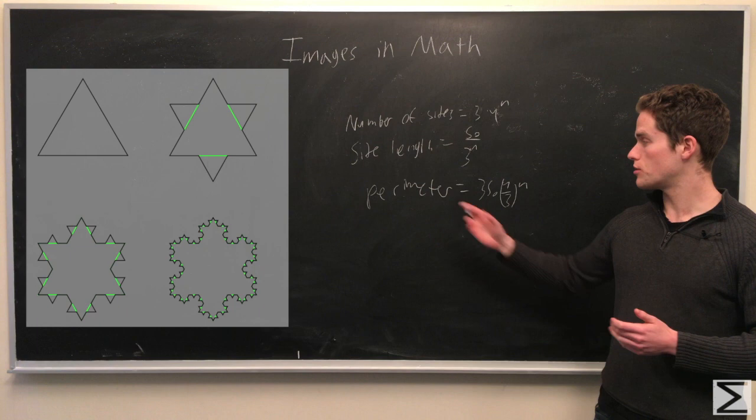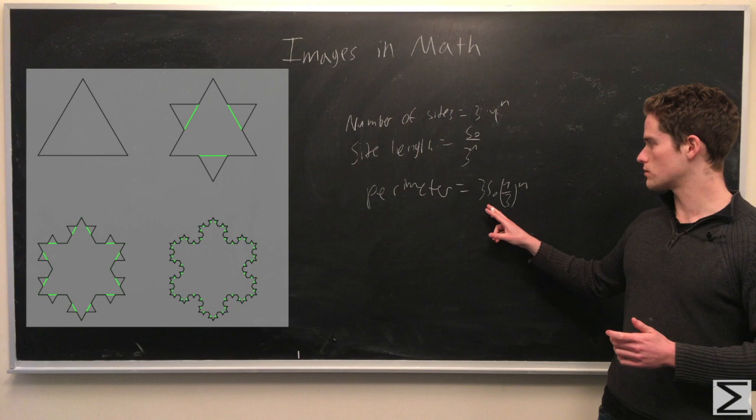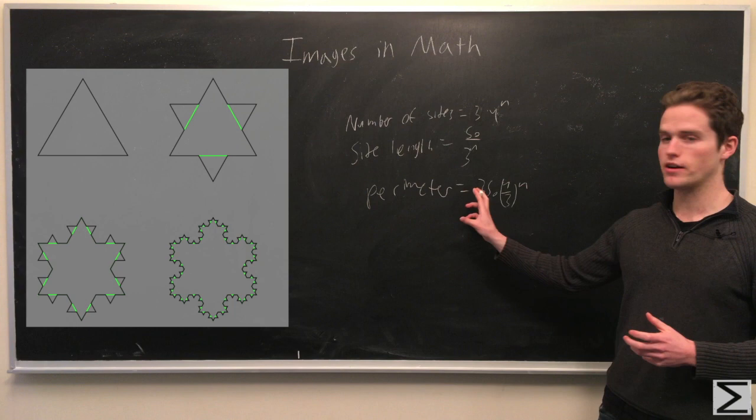So the perimeter is the sum of the length of each side, which is these two multiplied together, so 3s₀ times (4/3)ⁿ. So note, as n goes to infinity, the perimeter actually goes to infinity.